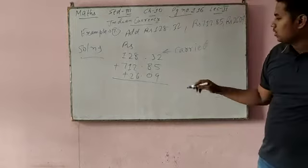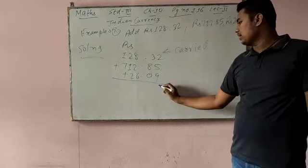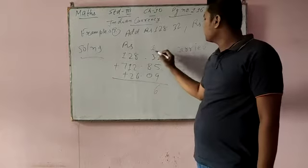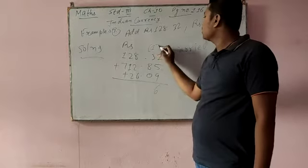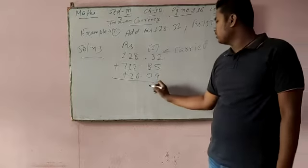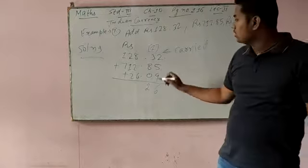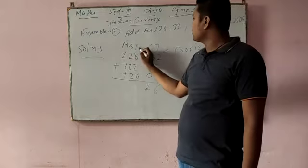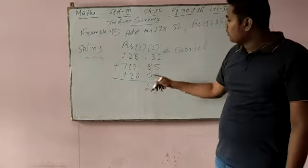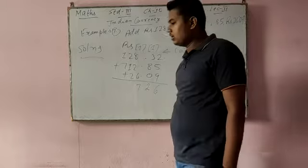So what carry do you have? See: 5 plus 2 is 7, 7 plus 9 is 16. Now one carry will come here. 3 plus 1 is 4, 4 plus 8 is 12. Now the decimal is here, so decimal 12 is here. So 1 will carry here. 8 plus 1 is 9, 9 plus 2 is 11, 11 plus 6 is 17.